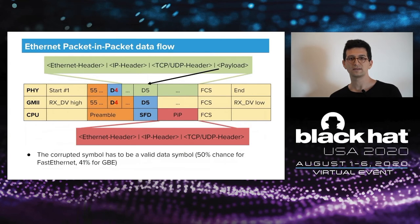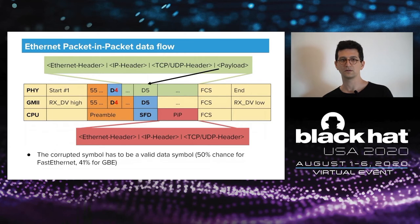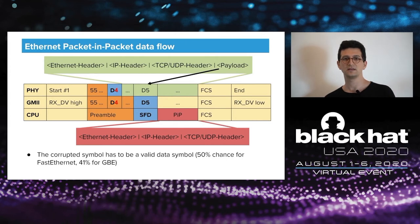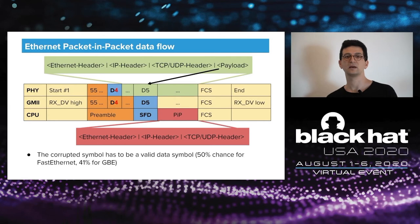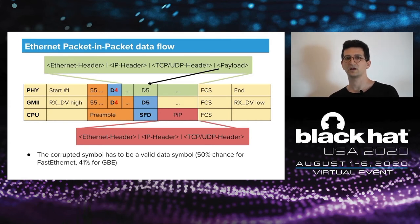This design is susceptible to packet-in-packet. Suppose the SFD byte gets corrupted — the 0xD5 byte becomes, for example, 0xD4. The CPU sees RX DV go high and starts looking for an SFD byte, but it won't find the corrupted byte, so it keeps searching. If the packet was specially crafted with a 0xD5 somewhere inside the payload, that becomes the new SFD, and all previous bytes are treated as preamble. In all implementations tested, none limited the preamble length or checked its value — therefore, if an attacker can place the first 0xD5 byte in the frame, a packet-in-packet condition will occur.